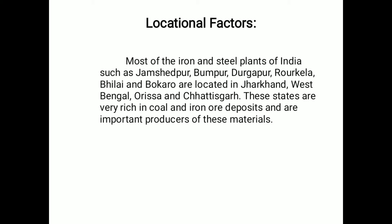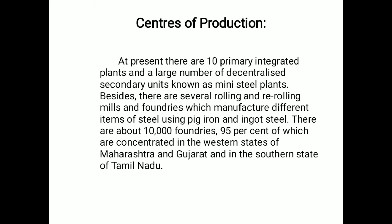Regarding locational factors, most of the iron and steel plants of India — such as Jamshedpur, Burnpur, Durgapur, Rourkela, Bhilai, and Bokaro — are located in Jharkhand, West Bengal, Odisha, and Chhattisgarh. These states are very rich in coal and iron ore deposits and are important producers of these materials.